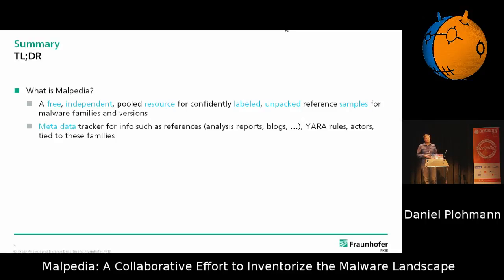At the same time, along with the samples, it makes sense to track all the metadata, because right now if you want to find blog posts on something you go to Google and that's a lot of effort. We could directly attach those references to the samples so you have everything in one place. And since we have a nice corpus, we can also test and develop our Yara rules against it.